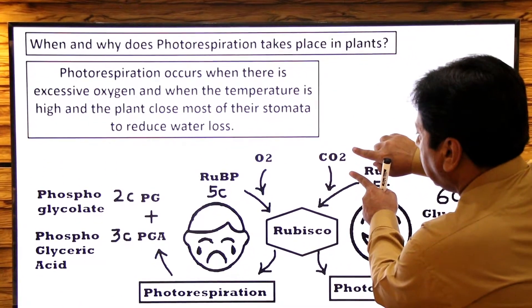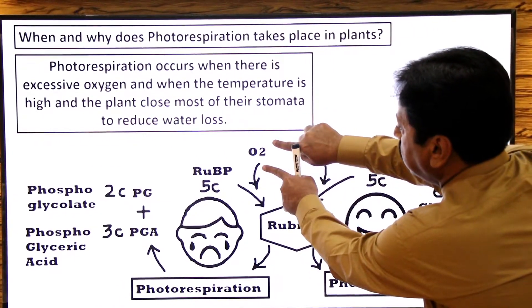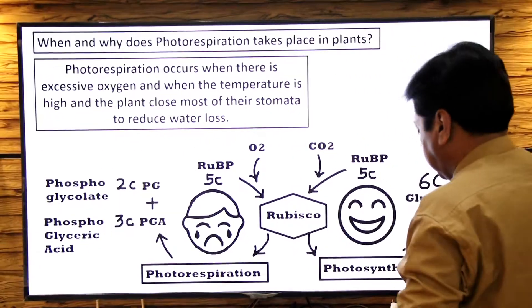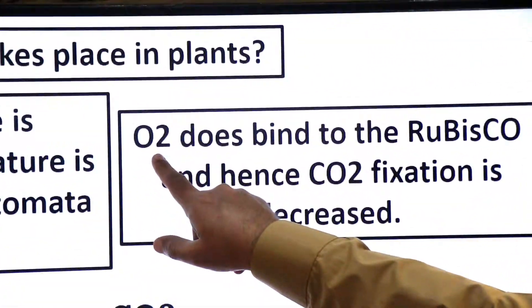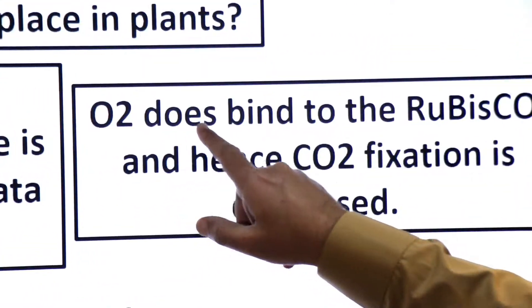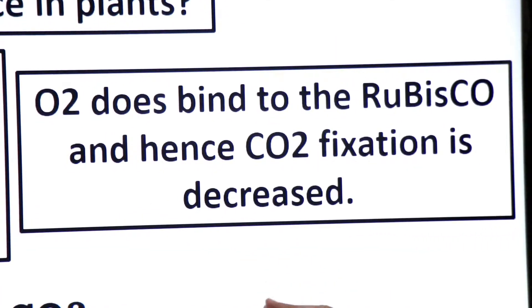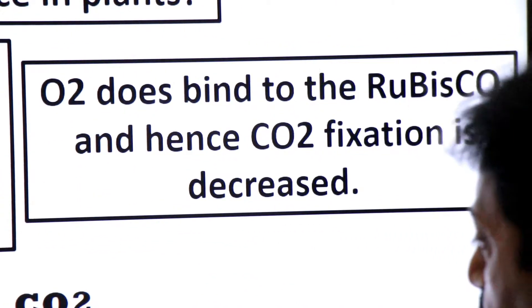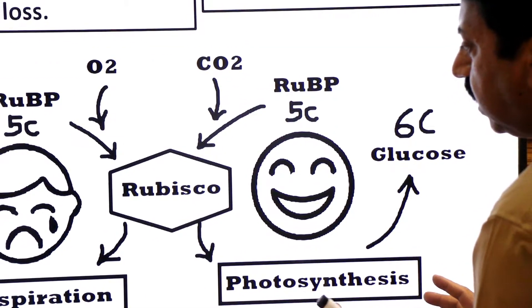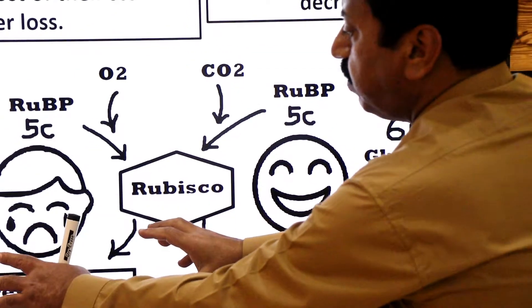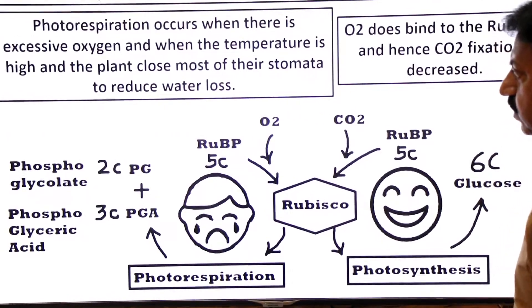Because of Rubisco's dual nature, if carbon dioxide is present it acts as carboxylase, but if oxygen is present it acts as oxygenase. Oxygen binds to Rubisco, and hence CO2 fixation is decreased. When CO2 fixation decreases, photosynthesis decreases, and photorespiration increases.